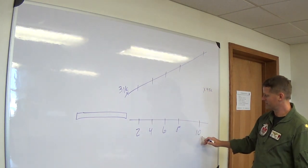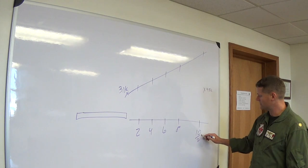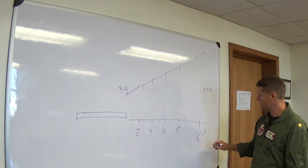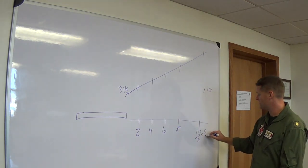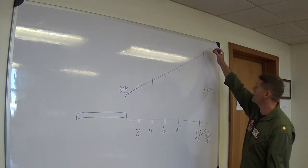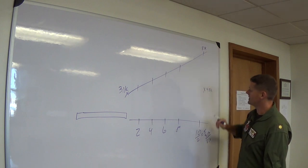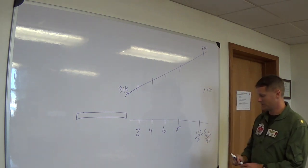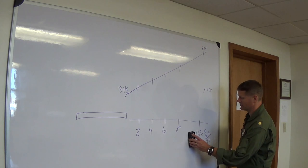How did you come up with that? The 1.5 DME plus your high key altitude. So: 10 divided by 2 equals 5, add high key — 3,100 — and you get 8,100 feet. 10 divided by 2 is pretty easy math. At 6 miles you need 6,100; at 2 miles 4,100; at 8 miles 7,100; at 4 miles 5,100. Starting to see a trend?